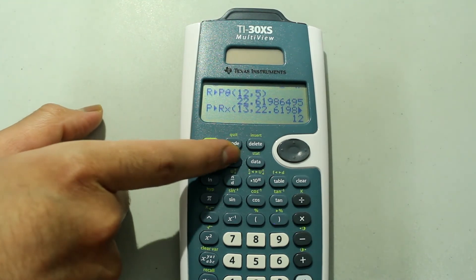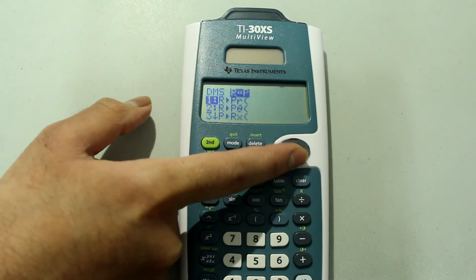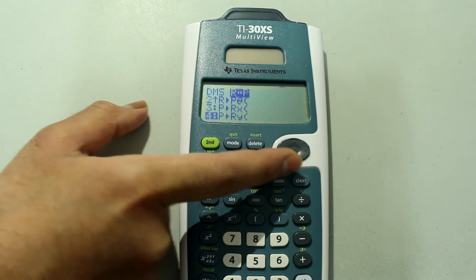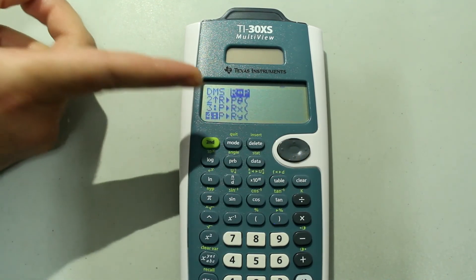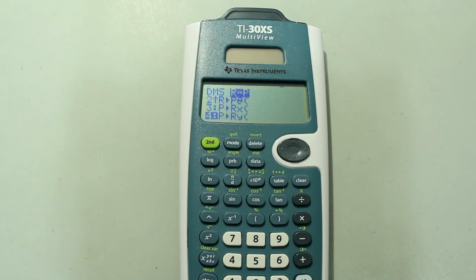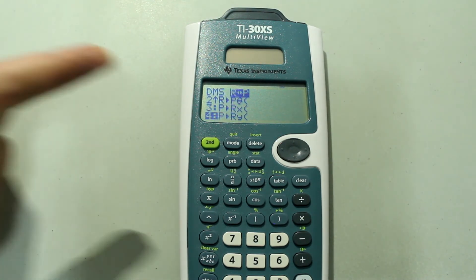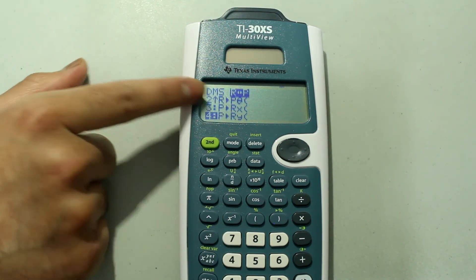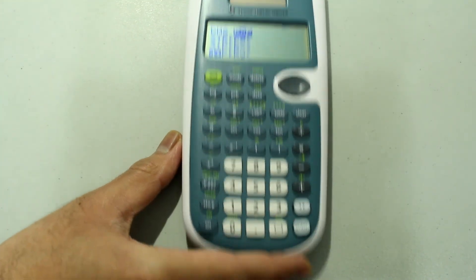And then, once again, we're going to go back to the same menu, arrow right, but this time we're going to choose the fourth option, which is going to take a polar input but give you the rectangular y value. So just press enter once you arrow down to the fourth option.